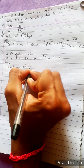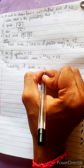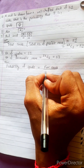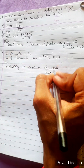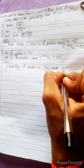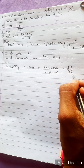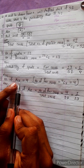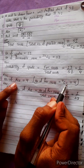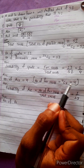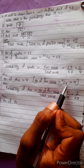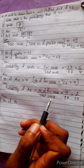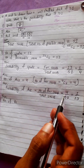Probability of spade equals favorable cases divided by total number of cards. This is the formula. The number of favorable cases is 13, and total cards is 52. So the probability of S equals 13 divided by 52, which gives 1 by 4.